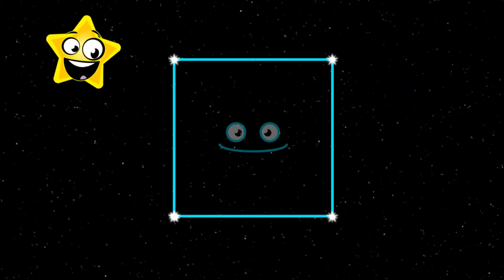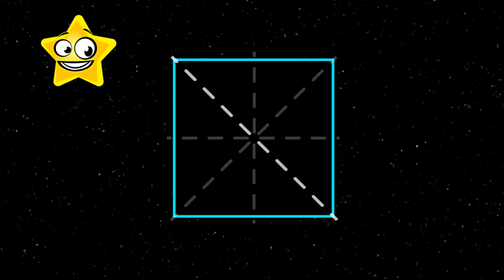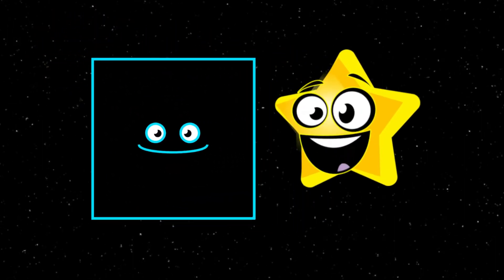Some shapes have multiple lines of symmetry. This square has four. One, two, three, four. Check me out.